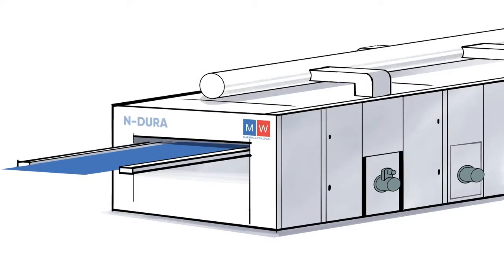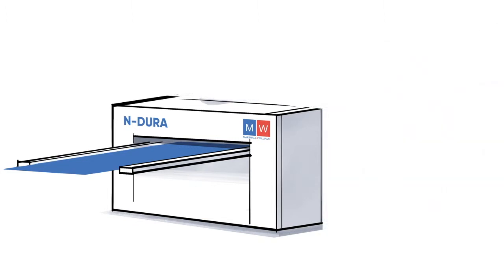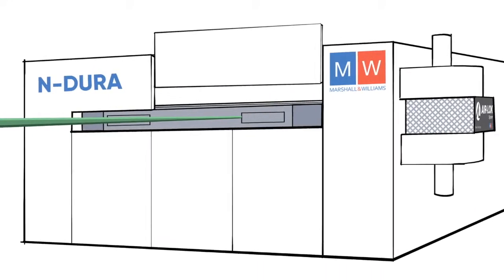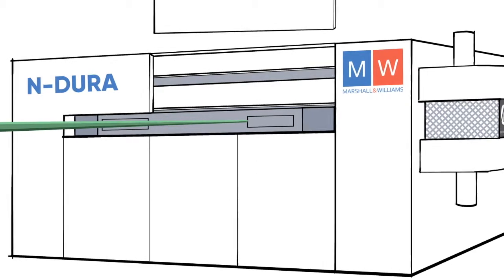With AirLock, the stentor exhaust system doesn't manage the end seals but only manages process exhaust. Meanwhile, with AirLock, there's no leakage in or out at the stentor ends.